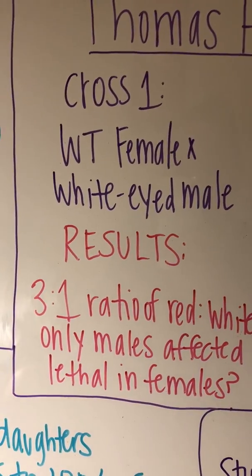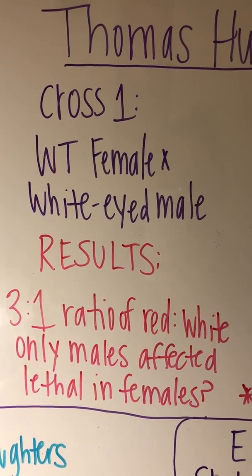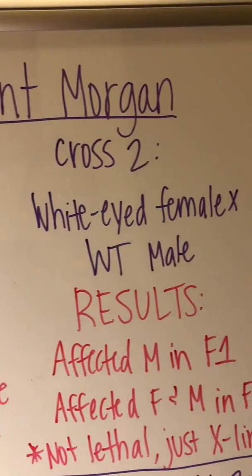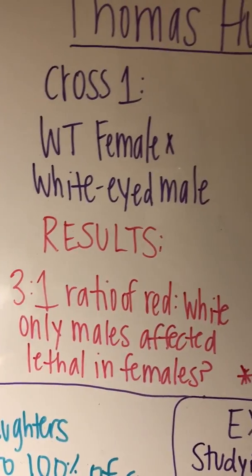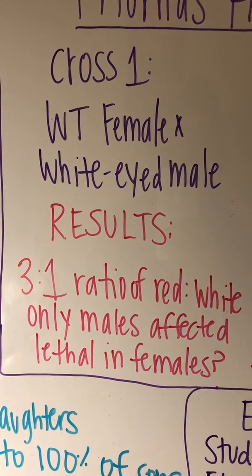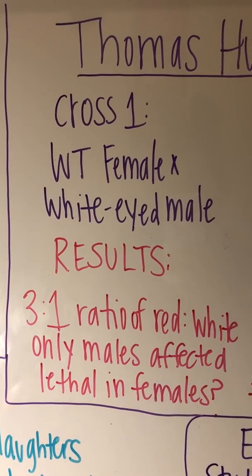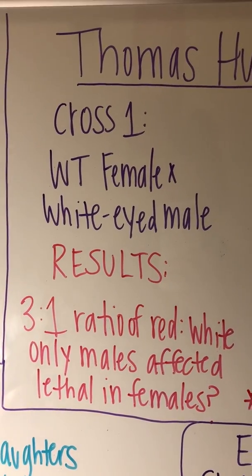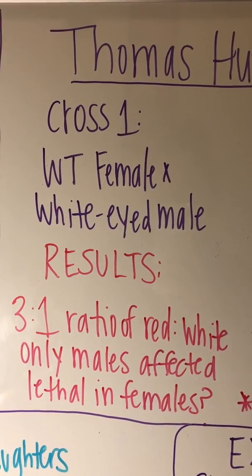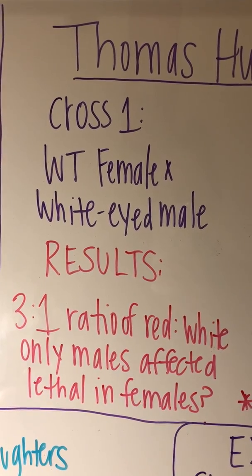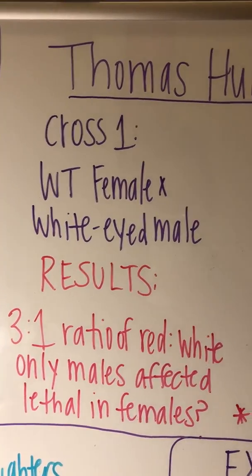Thomas Hunt Morgan was a scientist that demonstrated the first reciprocal cross by crossing a wild-type female with red eyes with a white-eyed male, and then a white-eyed female with a wild-type male. In the first cross he discovered a 3-to-1 ratio of red eyes to white eyes, which displays a normal dominance pattern for a recessive trait. However, Morgan noted that only males were affected.